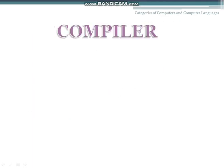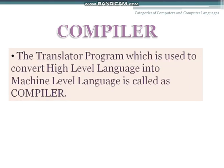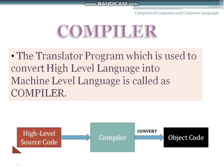The next language processor is compiler. The translator program which is used to convert high-level language into machine level language is called a compiler — same as interpreter. A compiler also converts high-level language, but there is a difference between compiler and interpreter. The high-level source code is converted into object code using the compiler.